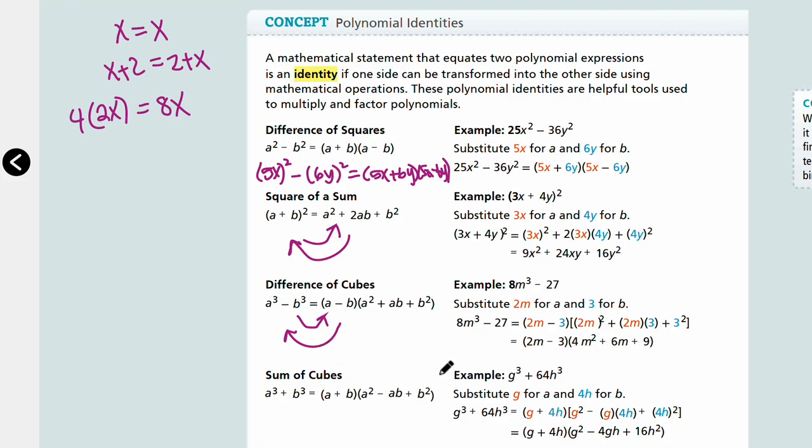Sum of cubes the same way, a cubed plus b cubed also works. And that's going to be a plus b times a squared minus ab plus b squared. So the square of a sum, the only thing you need to watch out is that sum of cubes is when you cube a and cube b and you add them. Square of a sum is when you add a plus b first and then you square them.